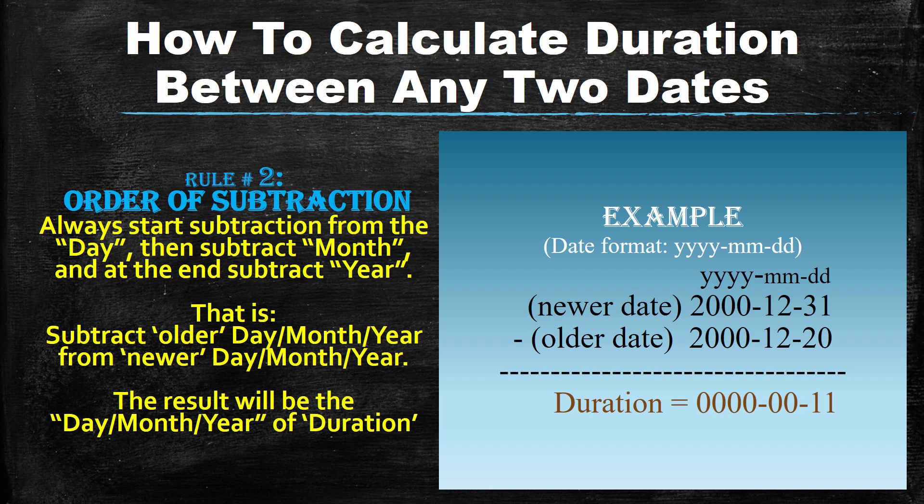In this example, we start from the day part of the date: newer date minus older date. 31 minus 20 equals 11. Now the month part: 12 minus 12 equals 0. And the year part: 2000 minus 2000 equals 0. So the duration is only 11 days — between 20th December 2000 and 31st December 2000, the duration is 11 days.